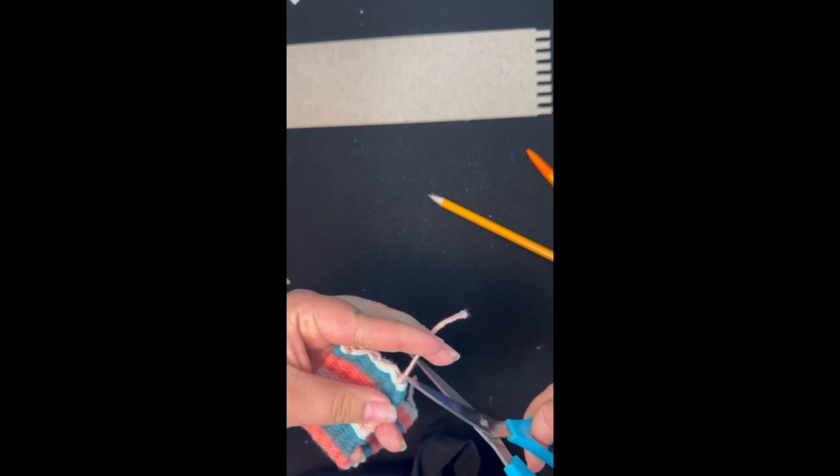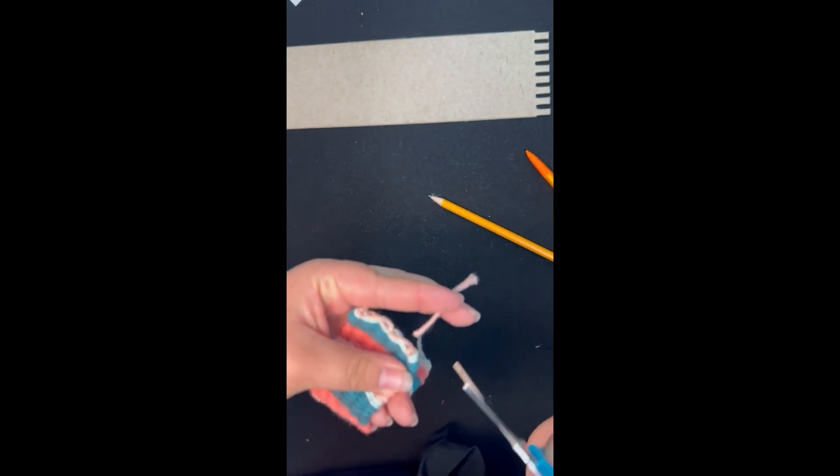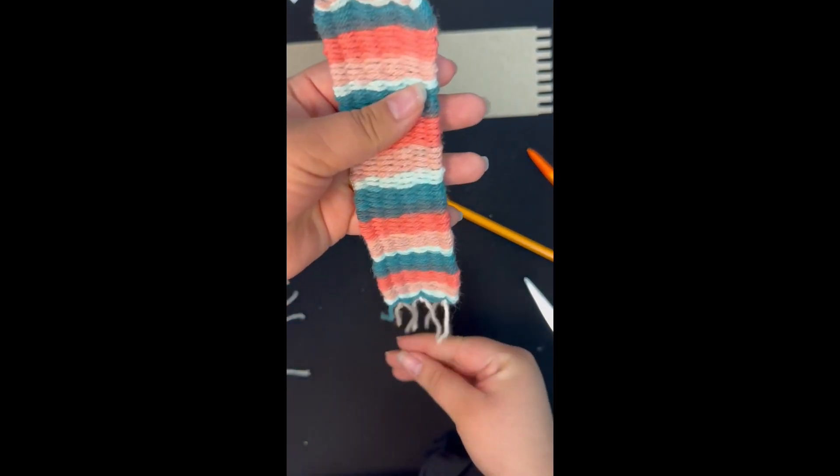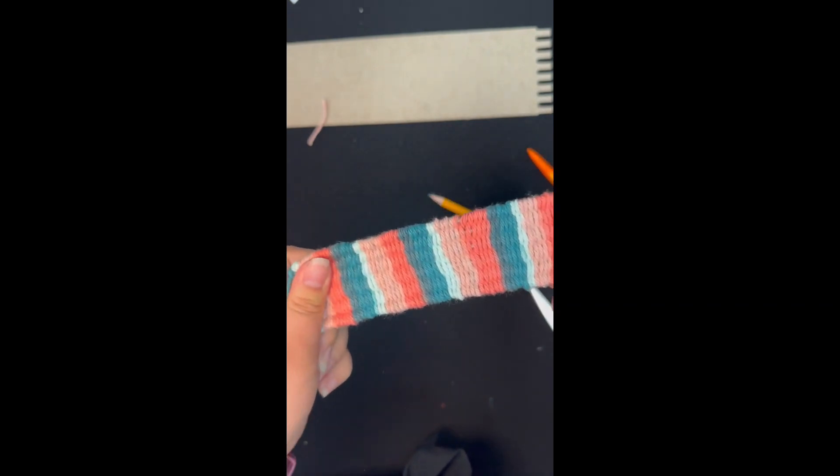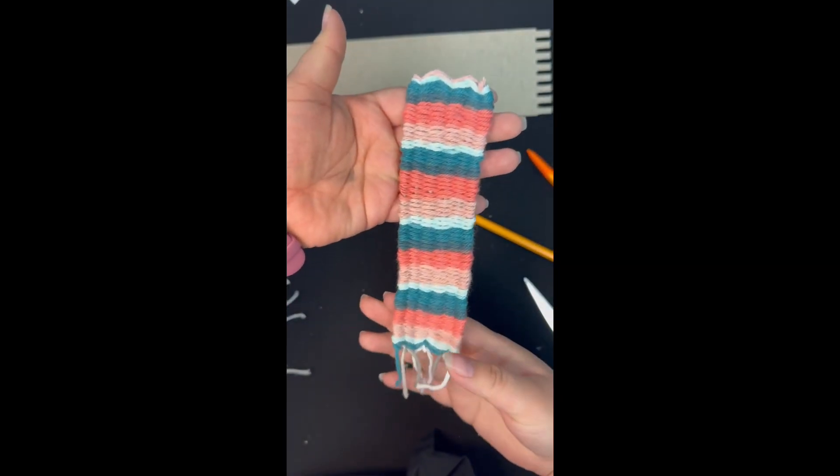You're going to cut off this little tail at the top. I forgot to record it, but you can cut off that little blue tail at the bottom as well just so that it looks a little bit neater.